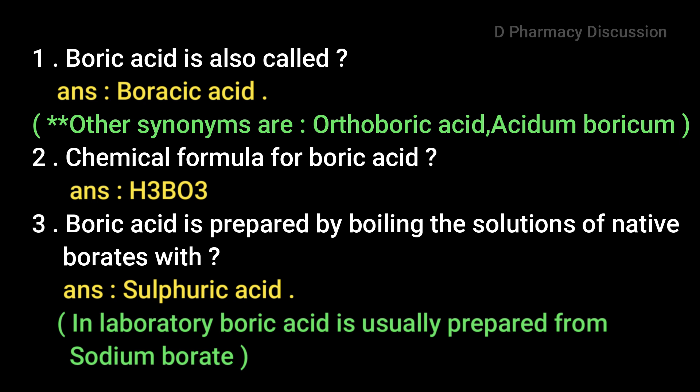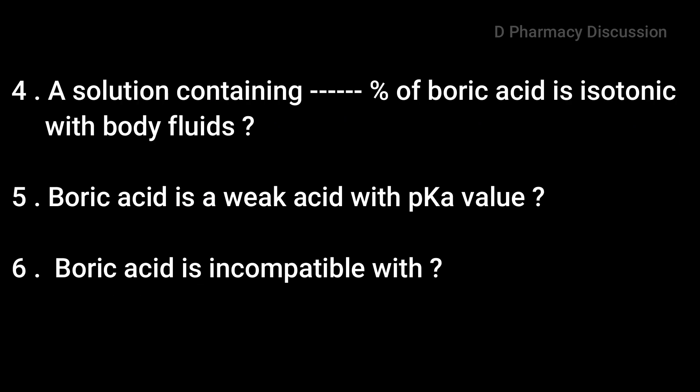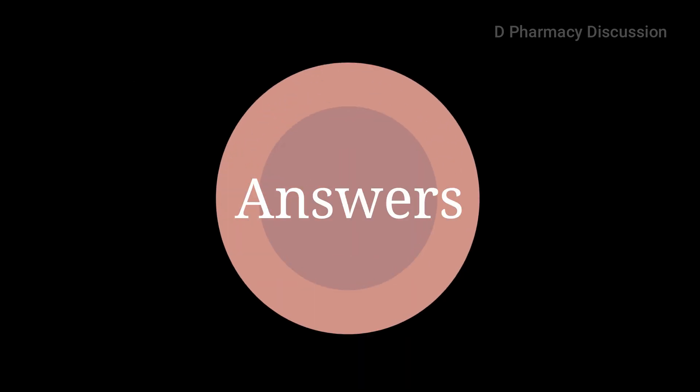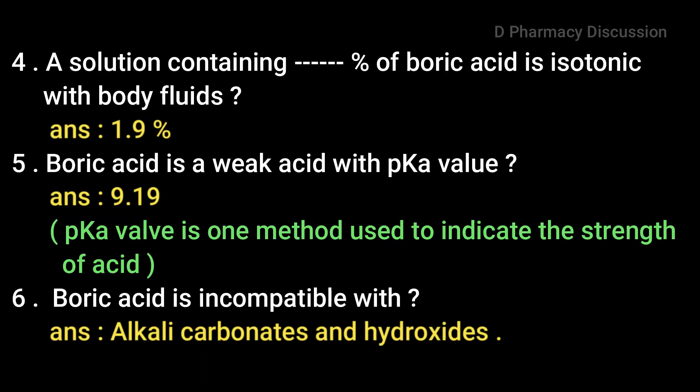Third question: Boric acid is prepared by boiling the solutions of native borates with concentrated sulfuric acid. In the laboratory, Boric acid is usually prepared from Sodium Borate. Next point: a solution containing 1.9% Boric acid is isotonic with body fluids.